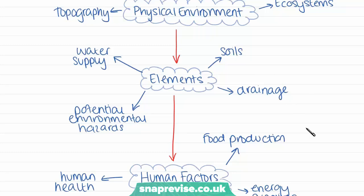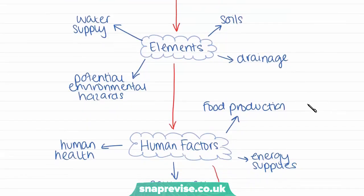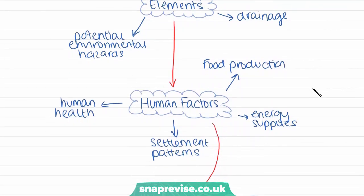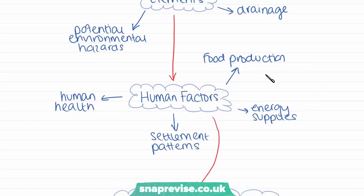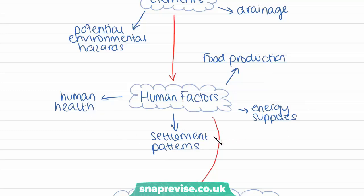These factors then go on to affect a lot of human factors including things like food production — if land is more fertile it's going to produce more food — also relating to energy supplies, settlement plans, and human health. These are some of the factors we'll be looking at in the rest of this chapter on population and the environment.